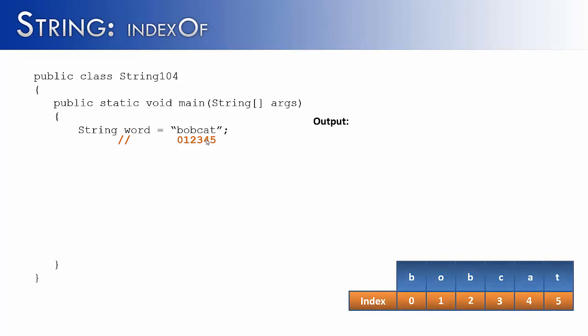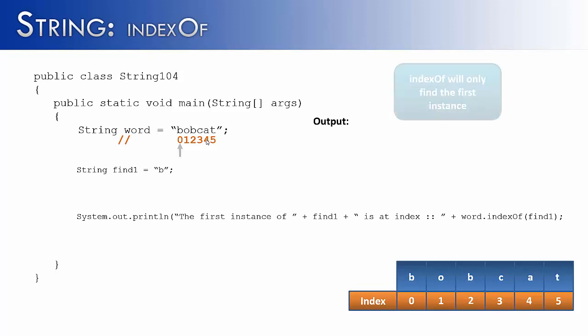IndexOf is really a search method. What it's going to do is search for where something is located inside of a string and tell you where it is via its index. And so if I was looking for the string B inside of Bobcat, it would find it in the first index. As you probably noticed, there are two Bs inside of Bobcat.